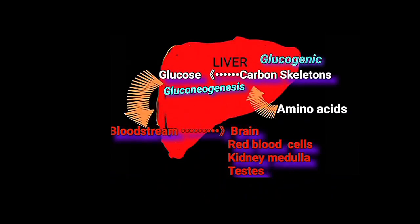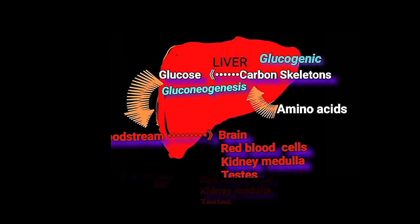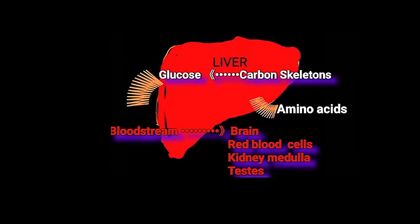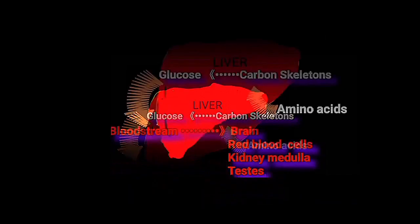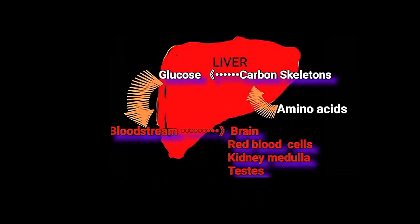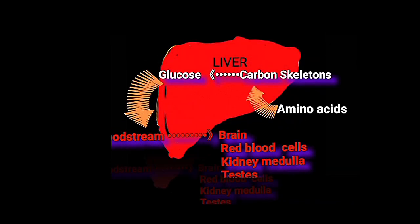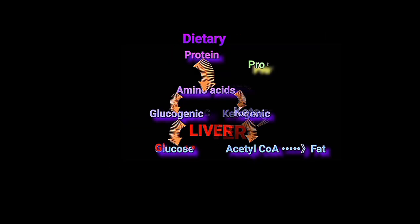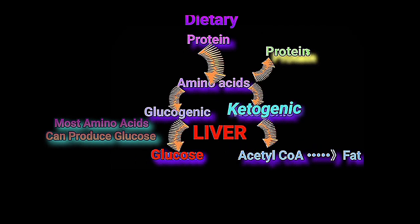These carbon skeletons can then be used to make glucose or fat molecules like fatty acids, cholesterol, and ketone bodies.